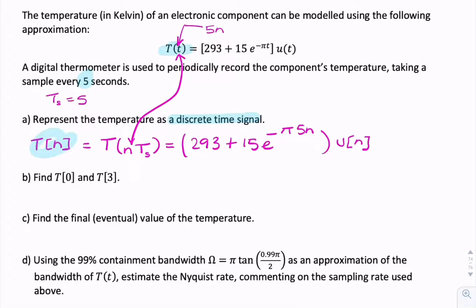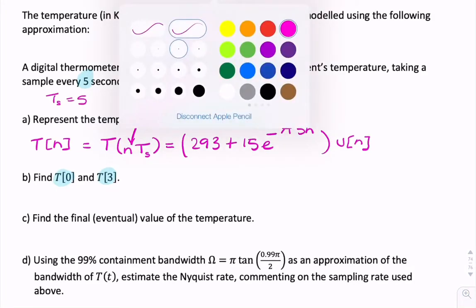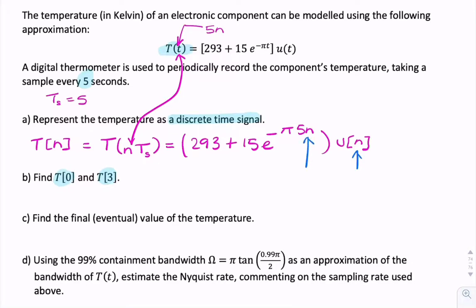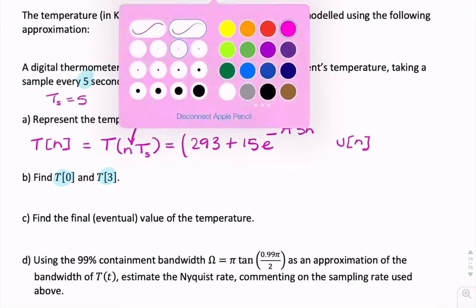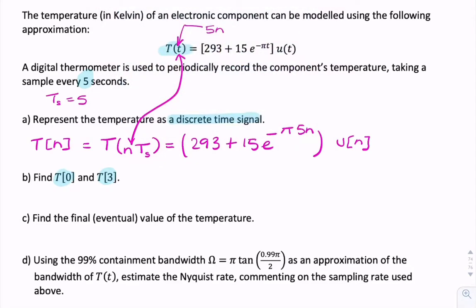Now it's asking for two discrete values, the first and the fourth. So that just involves replacing n here with 0 and then replacing it with 3. So let me close that bracket. So T of 0 would be 293 plus 15e to the 0 u of 0, which is just 293. No, it isn't. It's 308.